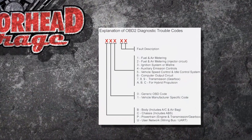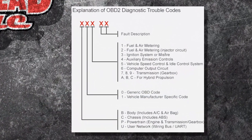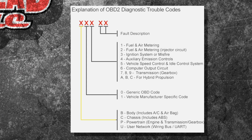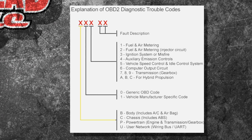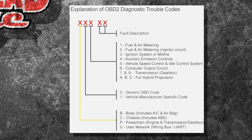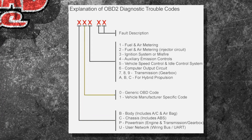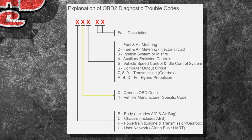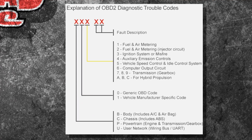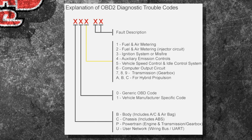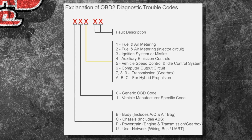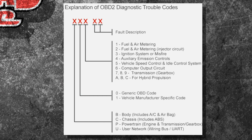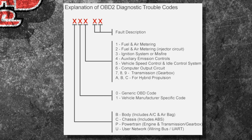That might look like a bunch of hieroglyphics, but here's what it means. Your first code is pretty simple: it's going to be a B, C, P, or U — B being body, C being chassis, P being powertrain, and U being a network code. That second digit is either generic or manufacturer-specific. Then we get into the actual system codes: fuel, air metering, ignition.